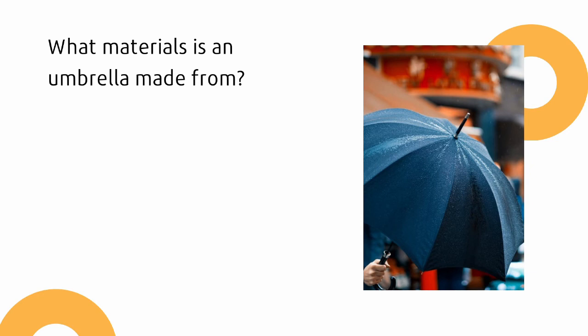What materials is an umbrella made from? The handle of the umbrella is made from a hard material like metal or wood because they are strong, and the shield is made of plastic because it is waterproof and light.